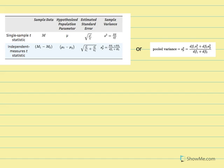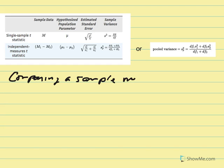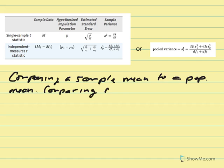The first column represents the notation we see when conducting a single sample t-test. Essentially, what we're doing is comparing a sample mean to a population mean — comparing m to mu — and determining if there is a statistically significant difference between those two values.